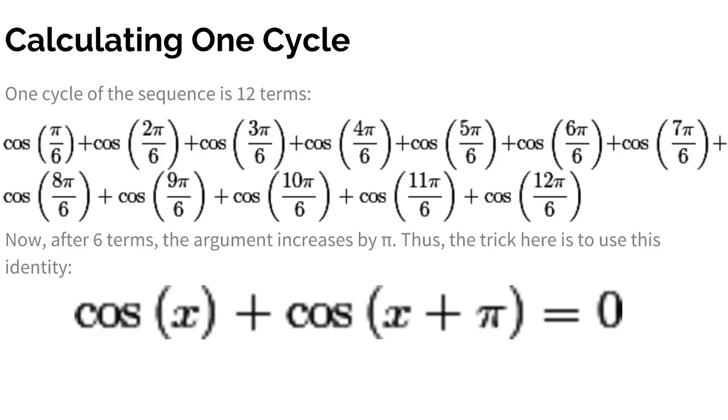So one cycle in this sequence is the sum of the first 12 terms. So cosine π/6 plus cosine 2π/6, all the way up to cosine 12π/6. This is still a lot. We've gotten it down from 2017 to 12, but 12 terms is still a lot. So now we're going to use another pattern.